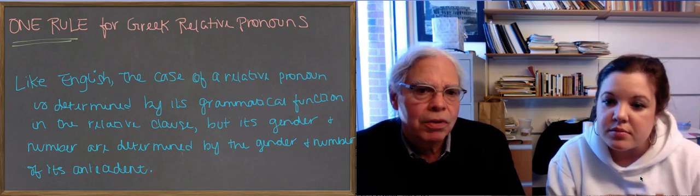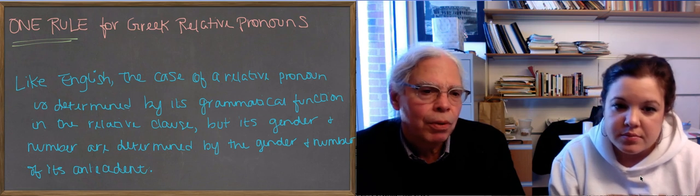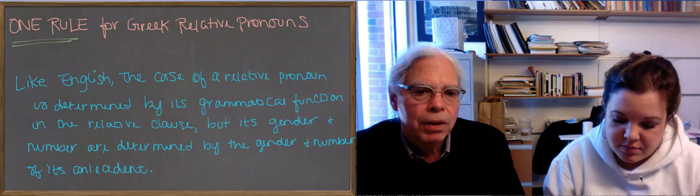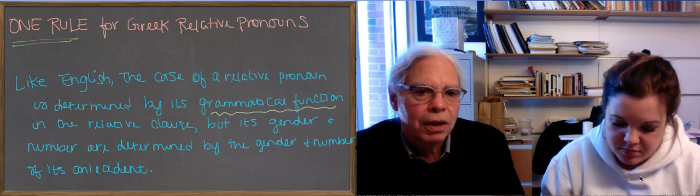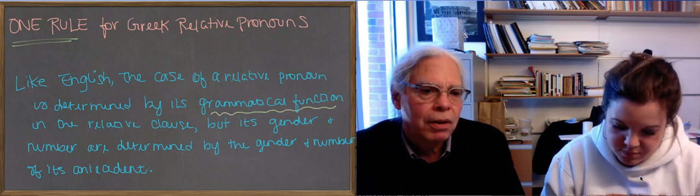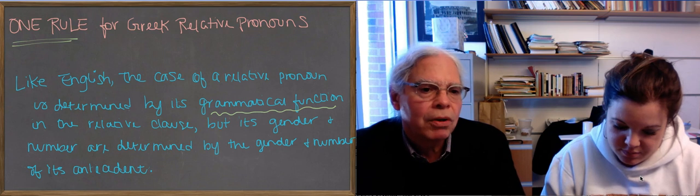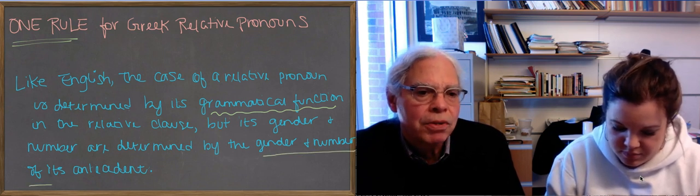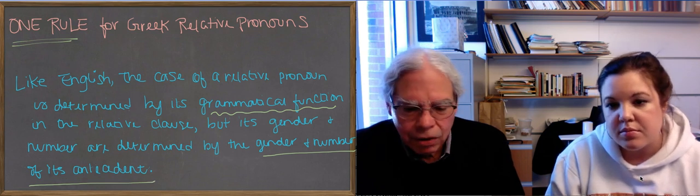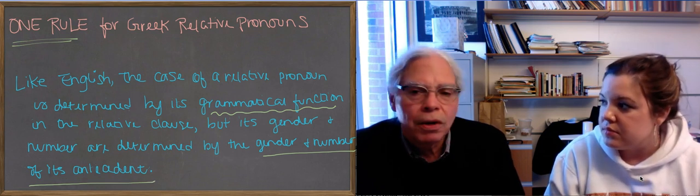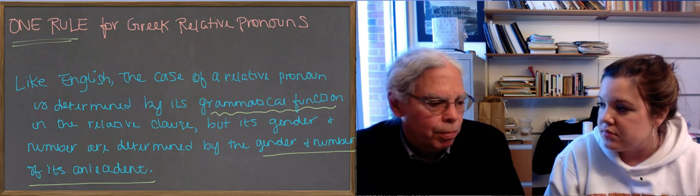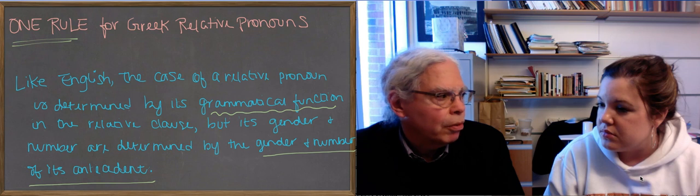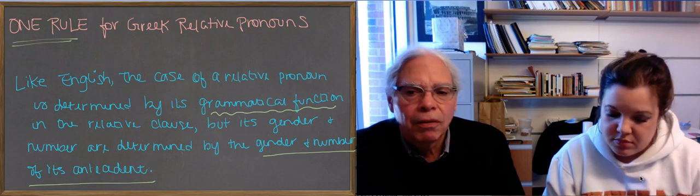But, so in English, the case of a relative pronoun is determined only by its grammatical function in the relative clause. But its gender, in the case of Greek, and number are determined by the gender and number of the relative clause's, relative pronoun's, antecedent. English doesn't have gender and number, Greek does, and they're used to make it possible to specify and to remove ambiguities about who the antecedent is of a relative pronoun.